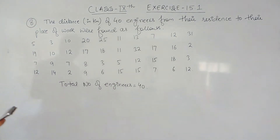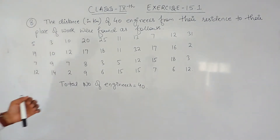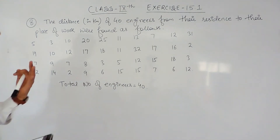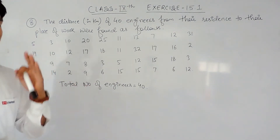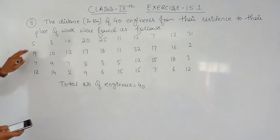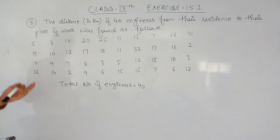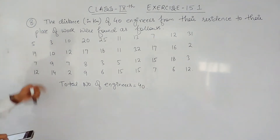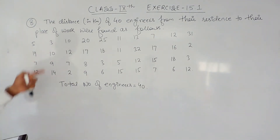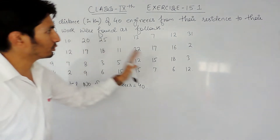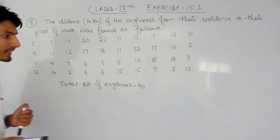Now what was question number 2? 40 engineers were asked what is the distance between their residence and their workplace. So this is the data which we found — the first engineer said 5 km, the second said 3 km, and so on. This is the data for 40 engineers.